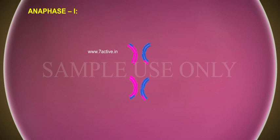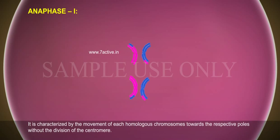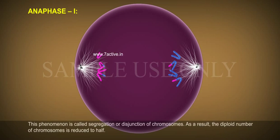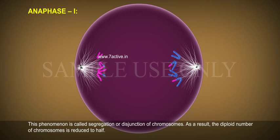Anaphase 1. It is characterized by the movement of each homologous chromosome towards the respective poles without the division of the centromeres. This phenomenon is called segregation or disjunction of chromosomes. As a result, the diploid number of chromosomes is reduced to half.